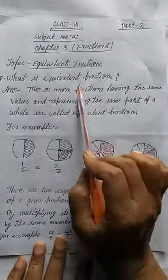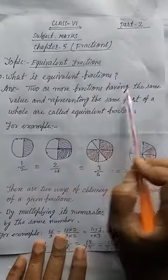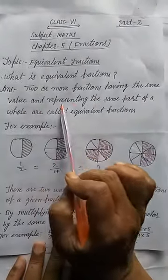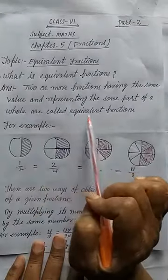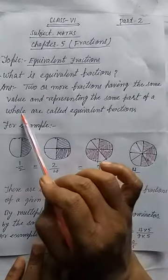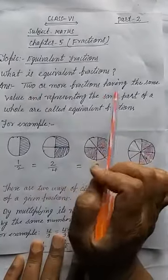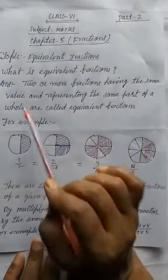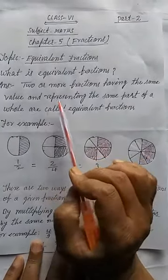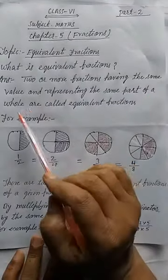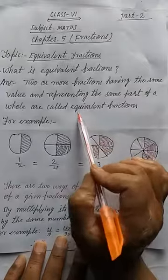Now I am reading first, then I will explain. Two or more fractions having the same value and representing the same parts of a whole are called equivalent fractions. You have to keep it in mind: two or more fractions having the same value — value should be same after simplifying — and representing the same part of a whole. In this way we define the equivalent fraction.